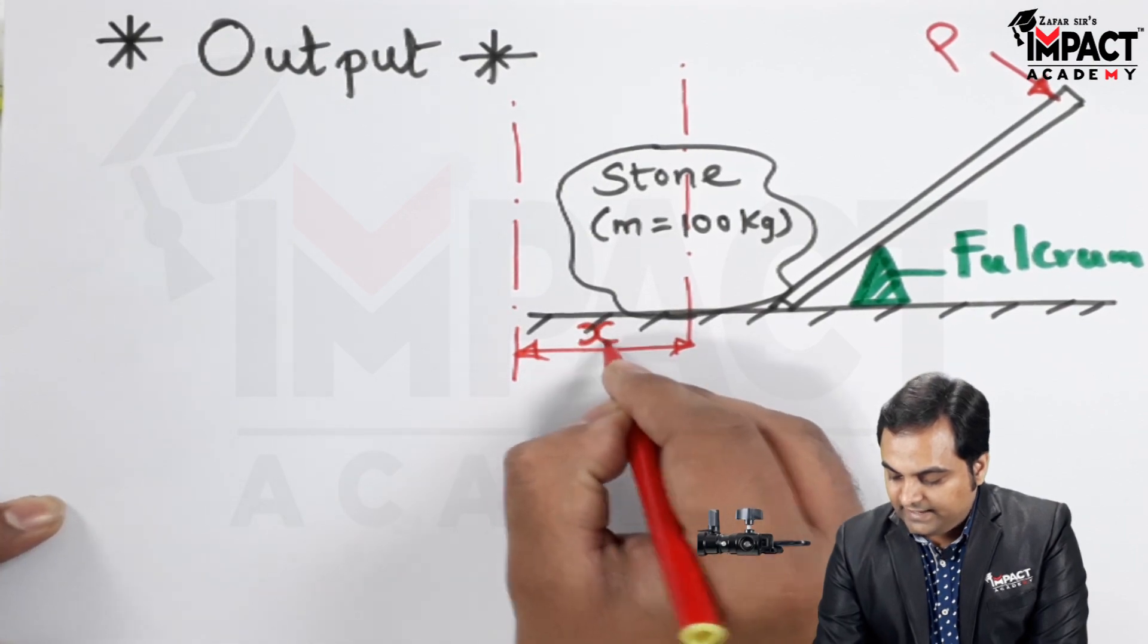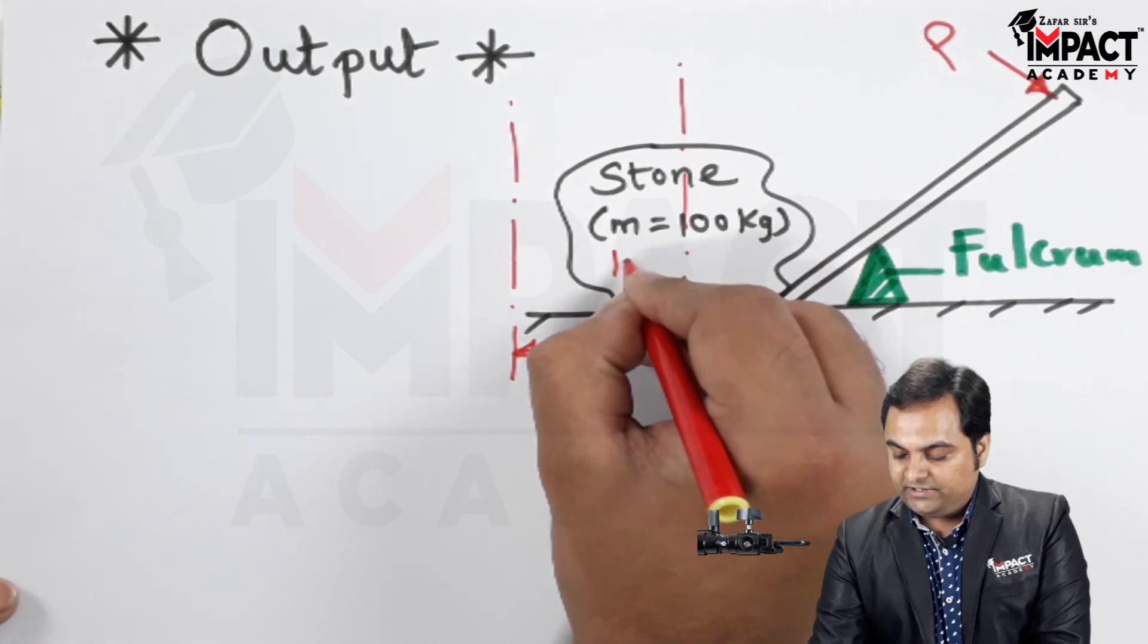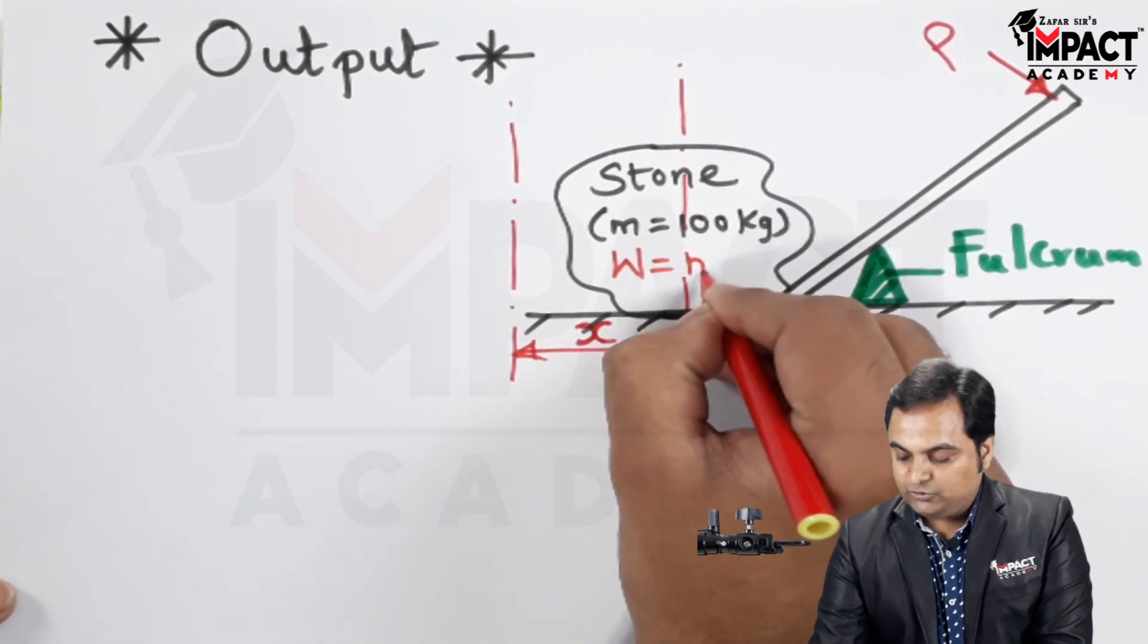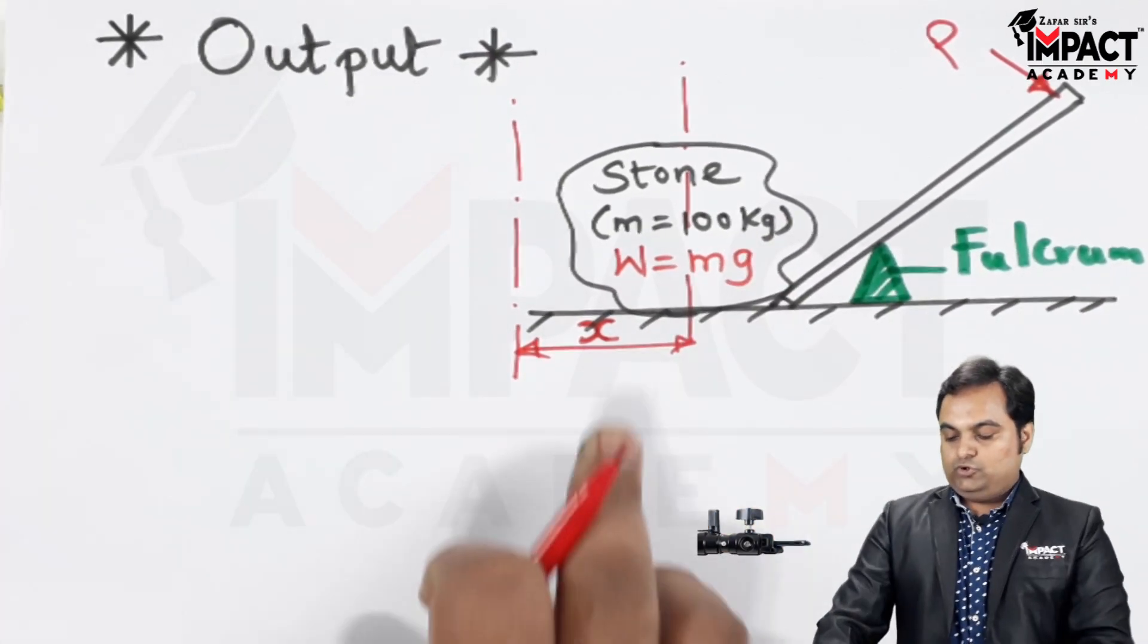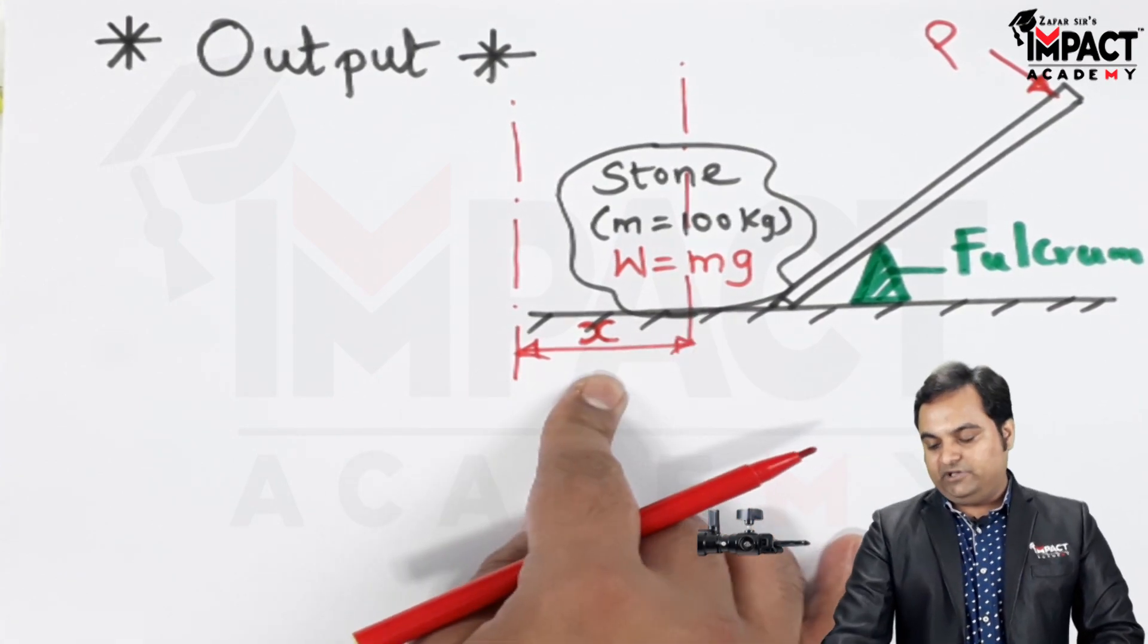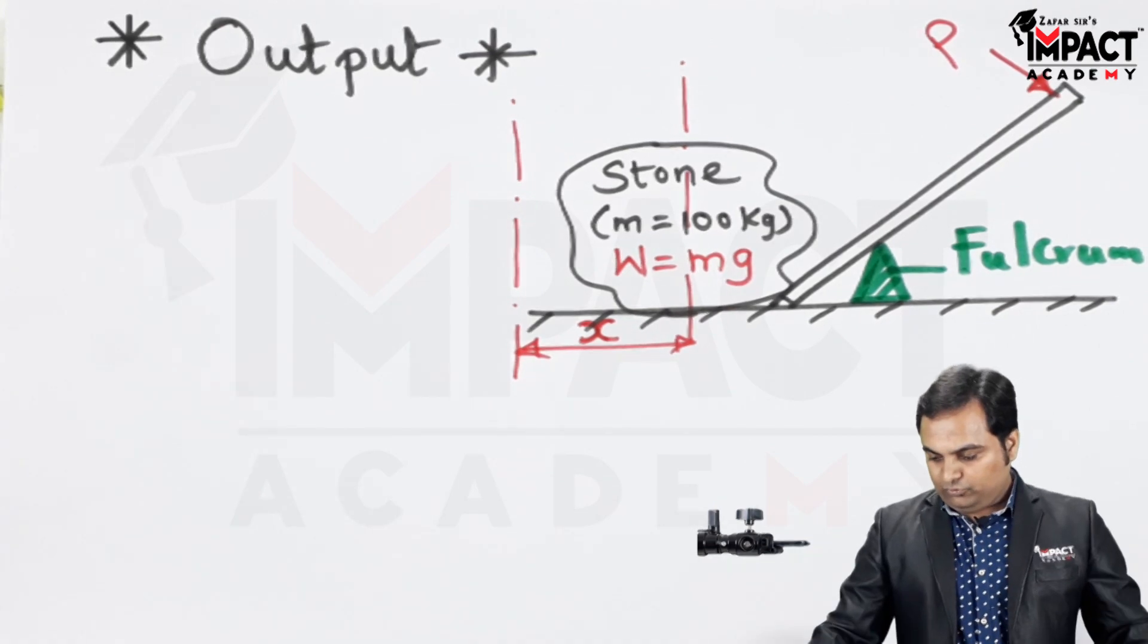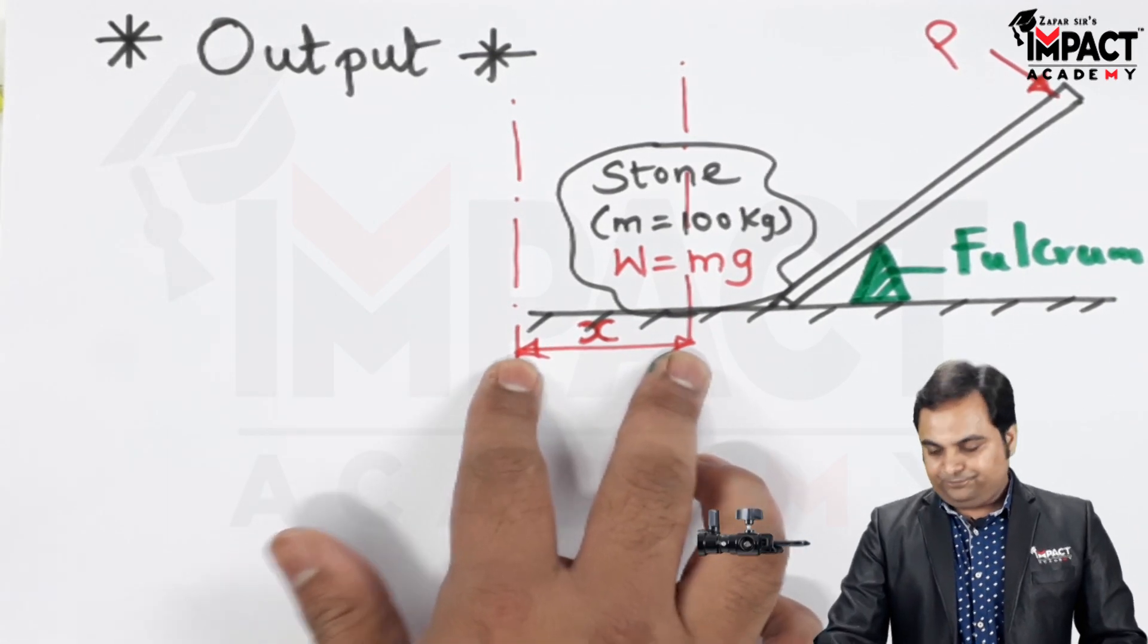So the distance which is covered by this stone is denoted by X. And here we have a mass, so out of that we can get the weight as well, which is m into g. So W is the amount of load, and X is the distance which is traveled by the load when the effort is trying to move it.